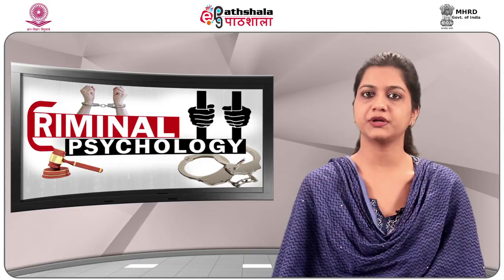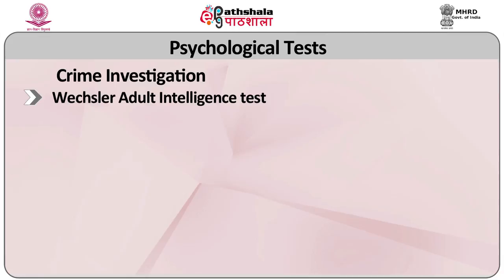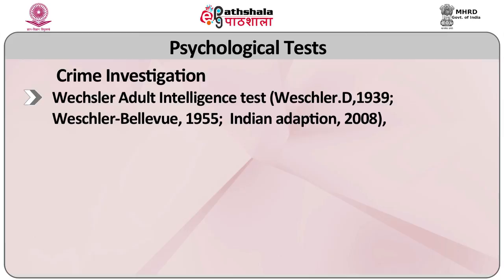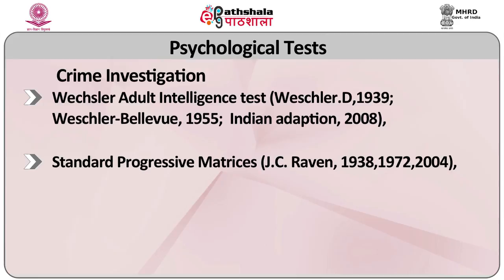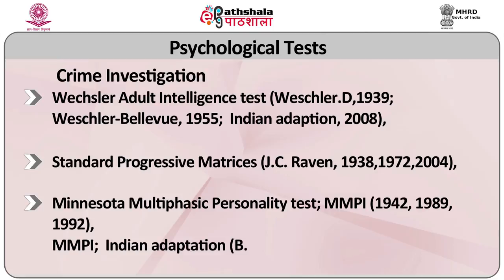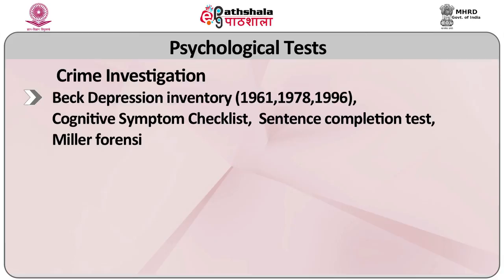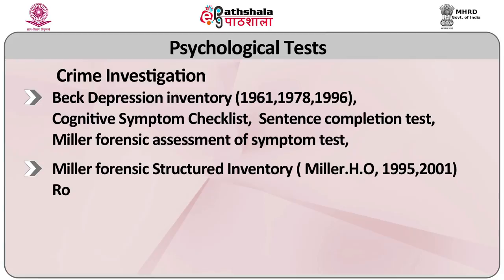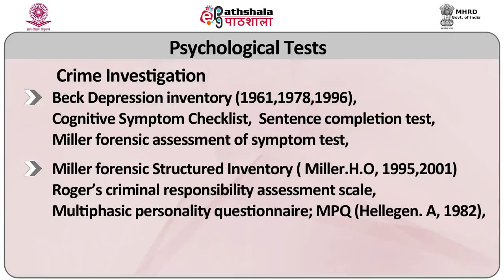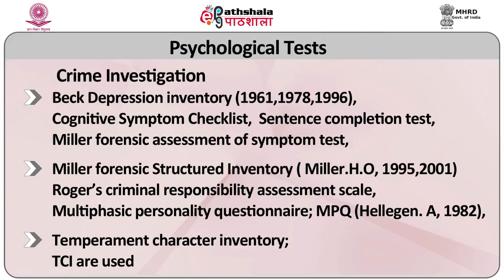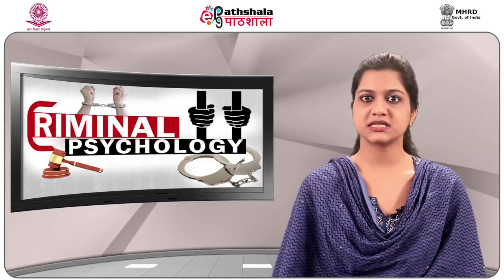Psychological tests used in forensic psychology include: Wechsler's Adult Intelligence Test (1939), Standard Progressive Matrices by Raven, Minnesota Multiphasic Personality Inventory (MMPI), Test for Malingering, Beck Depression Inventory, Cognitive Symptom Checklist, Sentence Completion Test, Miller Forensic Assessment of Symptoms Test, Miller Forensic Structured Inventory, Rogers Criminal Responsibility Assessment Scale, Multiphasic Personality Questionnaire, and Temperament and Character Inventory (TCI).